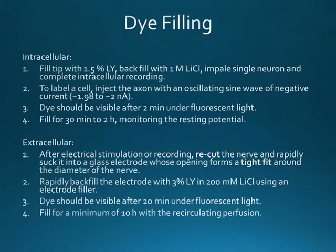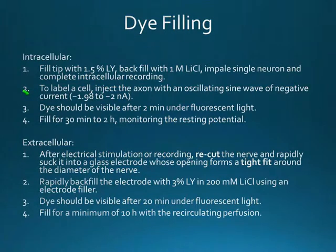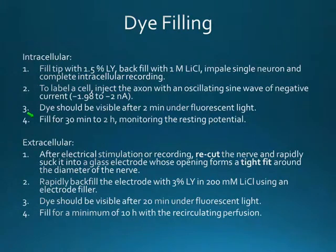Let's talk through some of the important stages of the protocol. For dye filling, you can do intracellular or extracellular depending on what you're interested in. For intracellular filling, you prepare the electrode with Lucifer Yellow and do your normal intracellular recording process. When you want to label the cell, you inject with an oscillating sine wave of current to introduce the dye. Within about two minutes the dye should be visible under fluorescent light — note that for Lucifer Yellow you should keep the light off and only periodically check because phototoxicity can damage cells. After about 30 minutes you can have very good fills; for complex neurons you may need up to two hours.